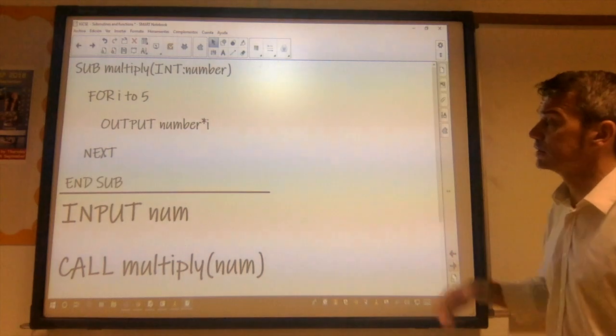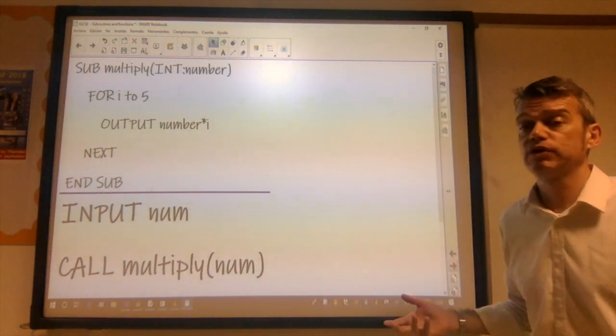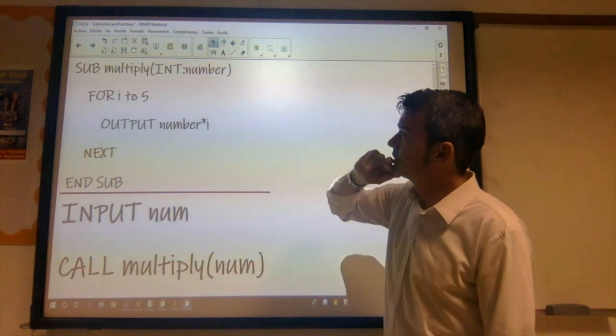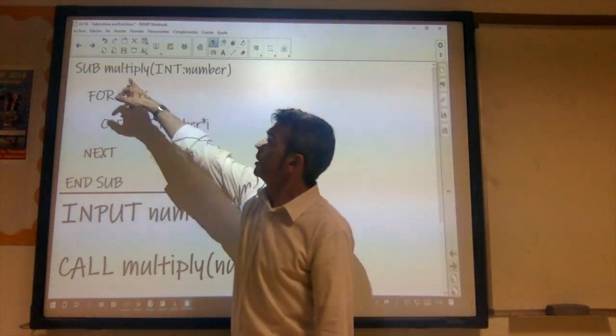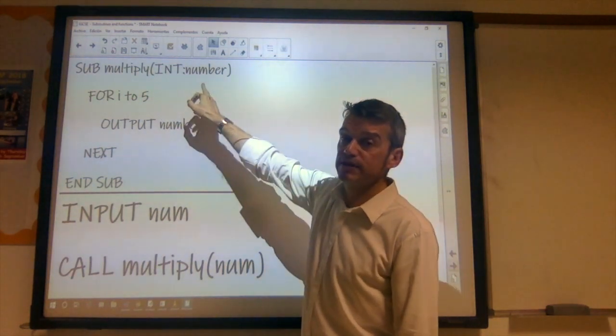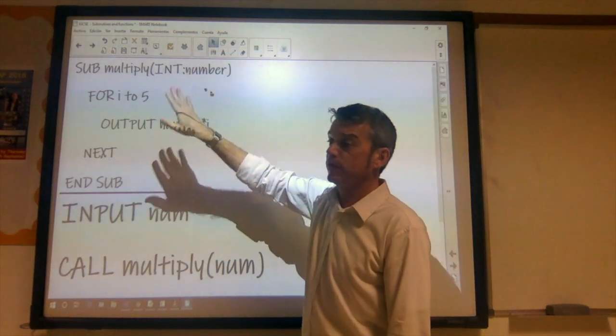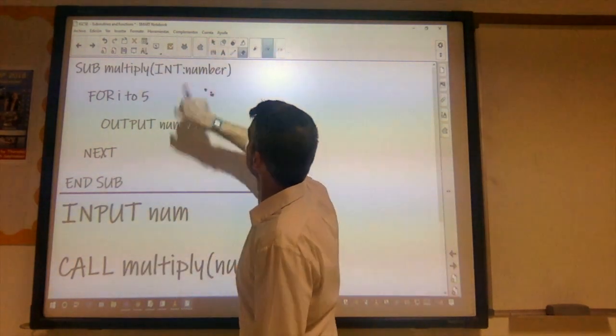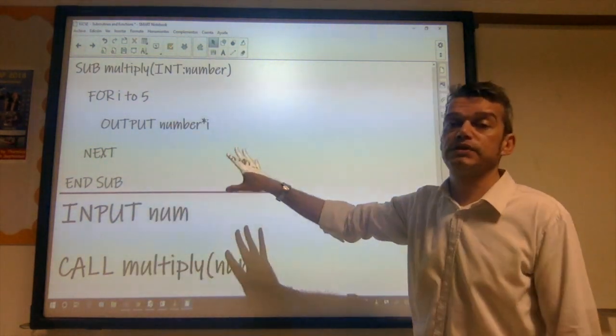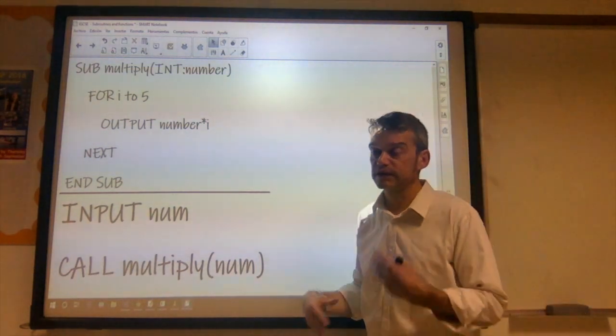So if we look at this, I've got another example, again written in pseudocode. So at the top half above the purple line is my subroutine. And I call my subroutine multiply and it will have a parameter passed to it called number. Now parameters when they are passed to a subroutine are pieces of data that are going to be used by the subroutine during its execution.